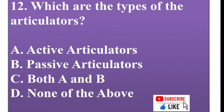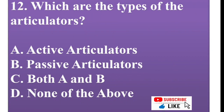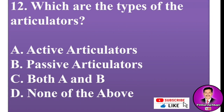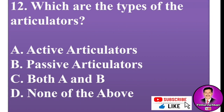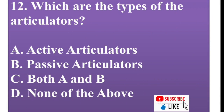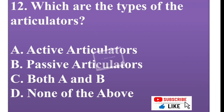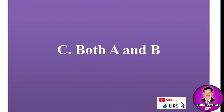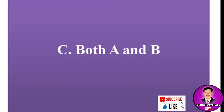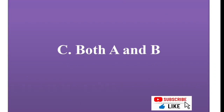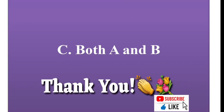This is the last MCQ. Which are the types of articulators? A) active articulators, B) passive articulators, C) both A and B, D) none of the above. The answer is C — both A and B. Thank you, students.